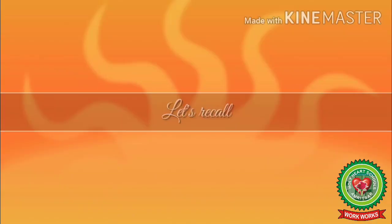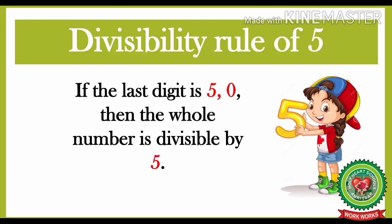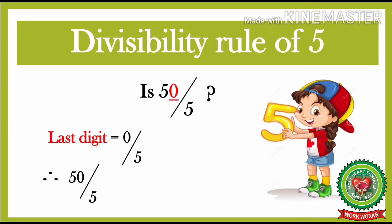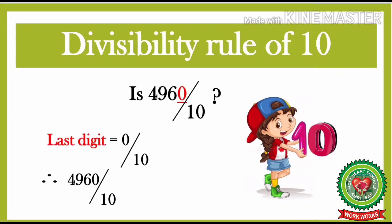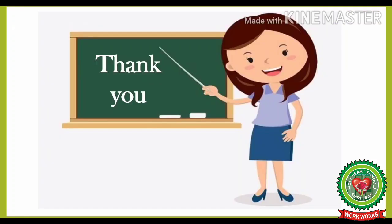Let us recall what we have learnt today. First, we learnt the divisibility rule of 5: if the last digit is 5 or 0, then the whole number is divisible by 5. Following the rule, in each sum we look for the last digit — if it is 0 or 5, the whole number is divisible by 5. Then we learnt the divisibility rule of 10: if the last digit is 0, then the whole number is divisible by 10. I hope you have understood the divisibility rule of 5 and 10. Now complete the sums given in your SNAP homework. Thank you.